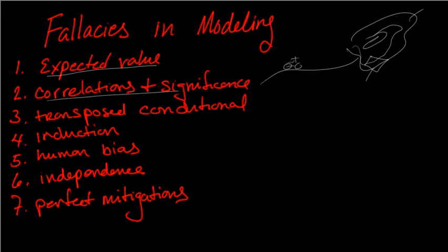The second fallacy is this idea that correlations are not causation. Despite the fact that data co-varies, it doesn't mean that there's a causal impact.